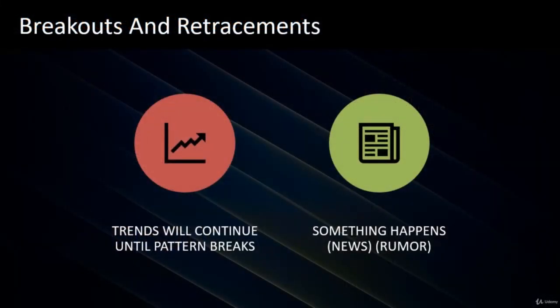Conceptually, trends will continue until the pattern breaks. Something has to break the pattern. A lot of times what causes that break is something in the news — an earnings announcement, something on a global scale, or even just a rumor — that might break the pattern. And that could be a breakout, or it might be a retracement where it's really not a true breakout.